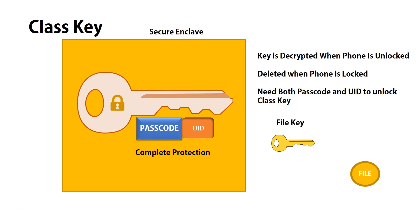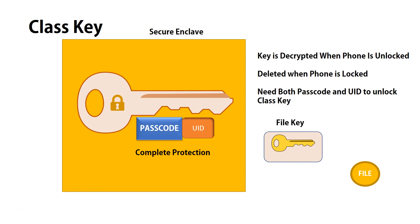A file key encrypts a file, and the file key is protected by the class key. The complete protection class key is designed for files that need to be the most secure — something like an email. It's a very secure file on the iPhone.